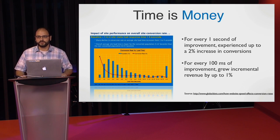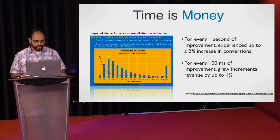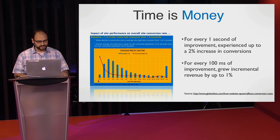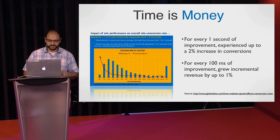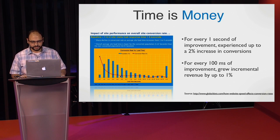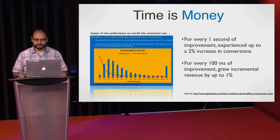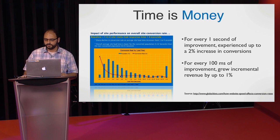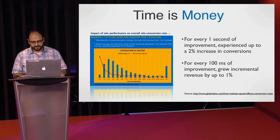This is a study that Walmart put together several years ago. That red line is the conversion rate, and this axis shows the time it takes to load the page. As you can see, the conversion rate drops significantly as the page takes longer to load. For every one second of improvement, there's at least a 2% increase in conversion. So really, every second, every millisecond counts.